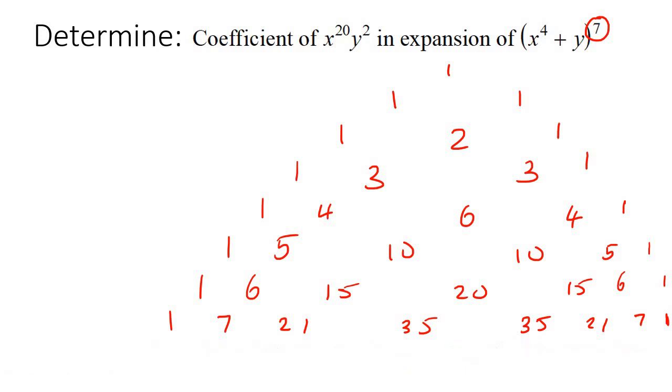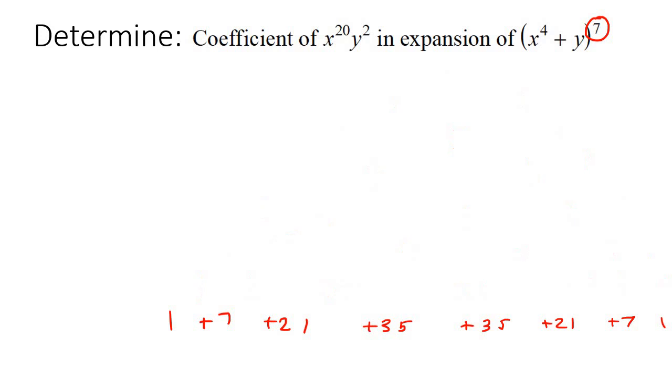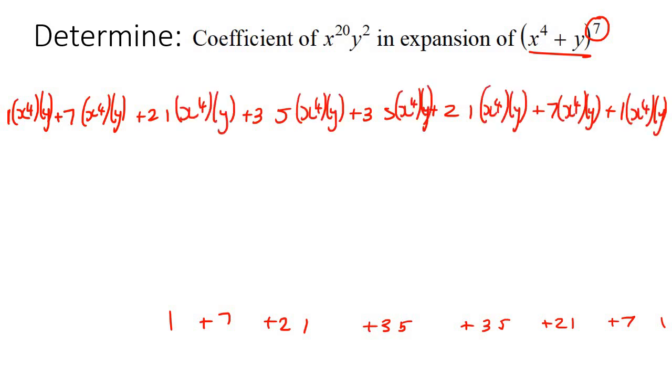Let's write them down: 1 plus 7 plus 21, then 35, 35, 21, 7, and 1, with pluses in between. Then we put x⁴ and y in brackets, and we do it for all of them. Take this number 7 and put it for the first one, then count down: 7, 6, 5, 4, 3, 2, 1, 0. With the y, count upwards: 0, 1, 2, 3, 4, 5, 6, 7.